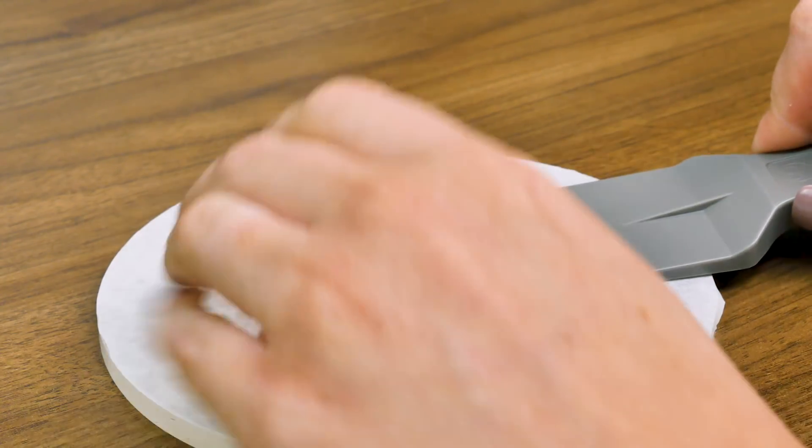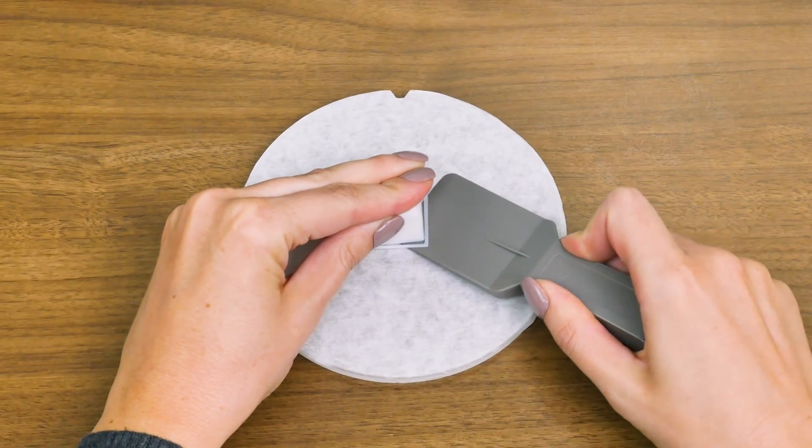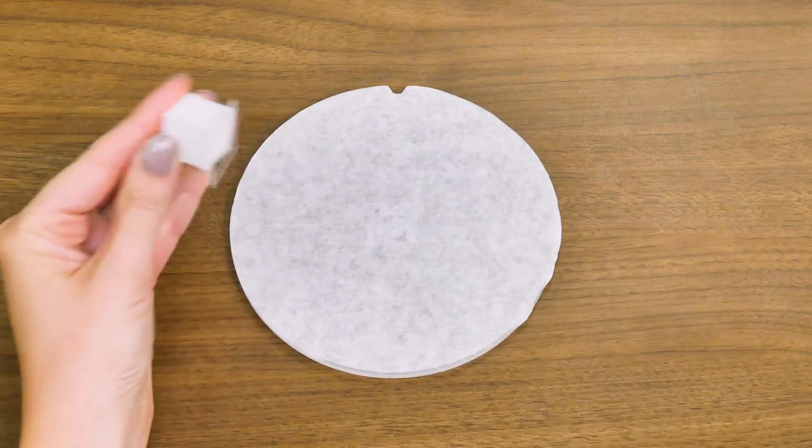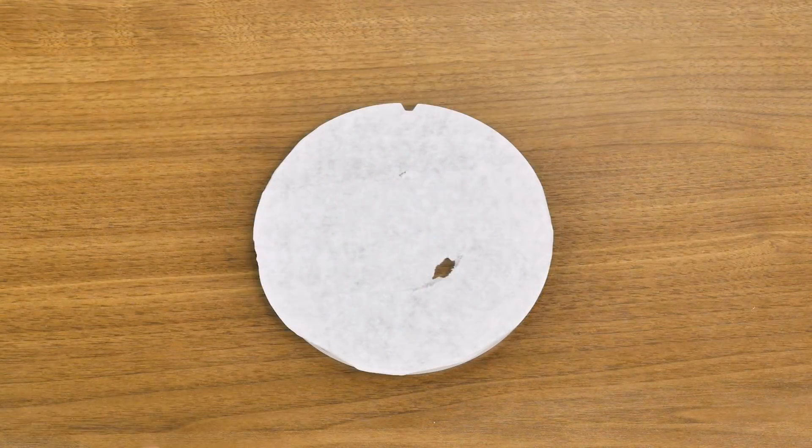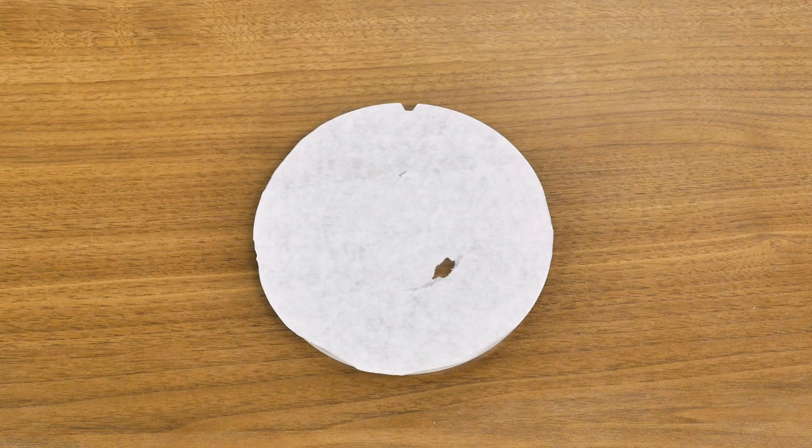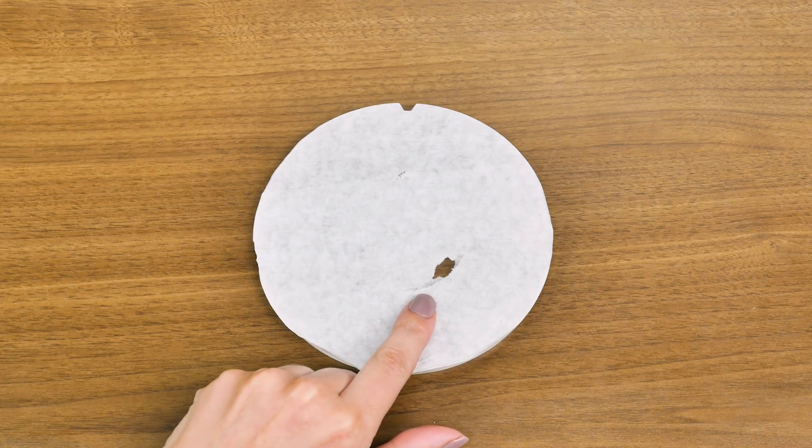If you damage the platform tape at all when you removed your 3D object, you may need to replace it before you attempt to print something else.